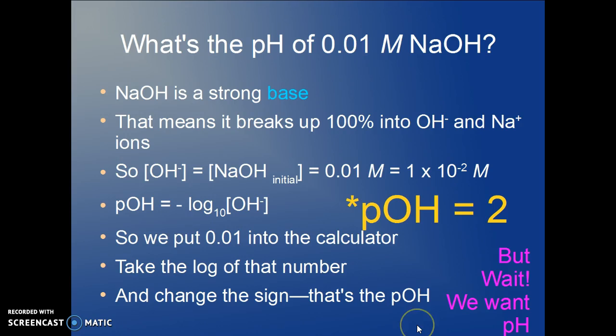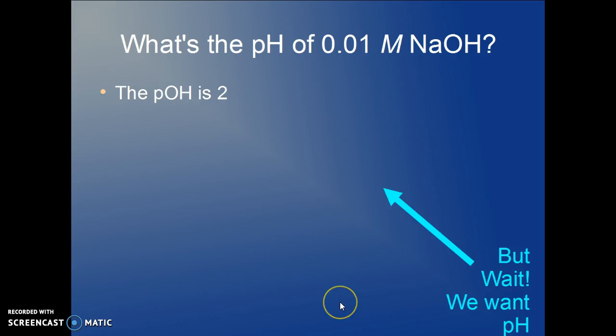But we want the pH. And we know since this is a basic solution, it's got to be greater than 7. The pOH is 2.